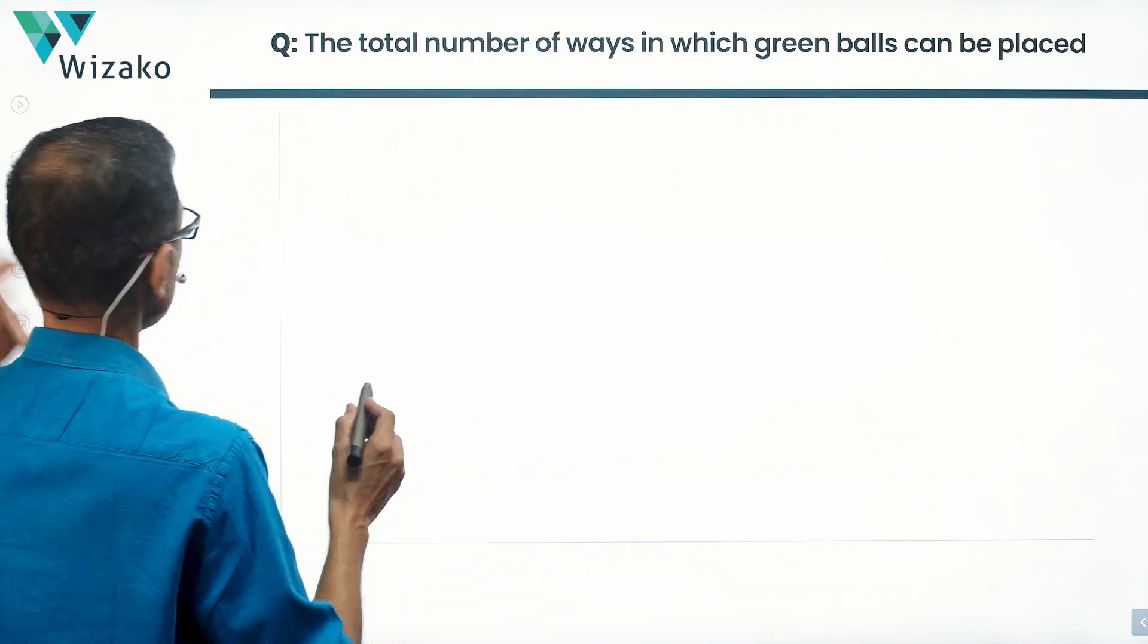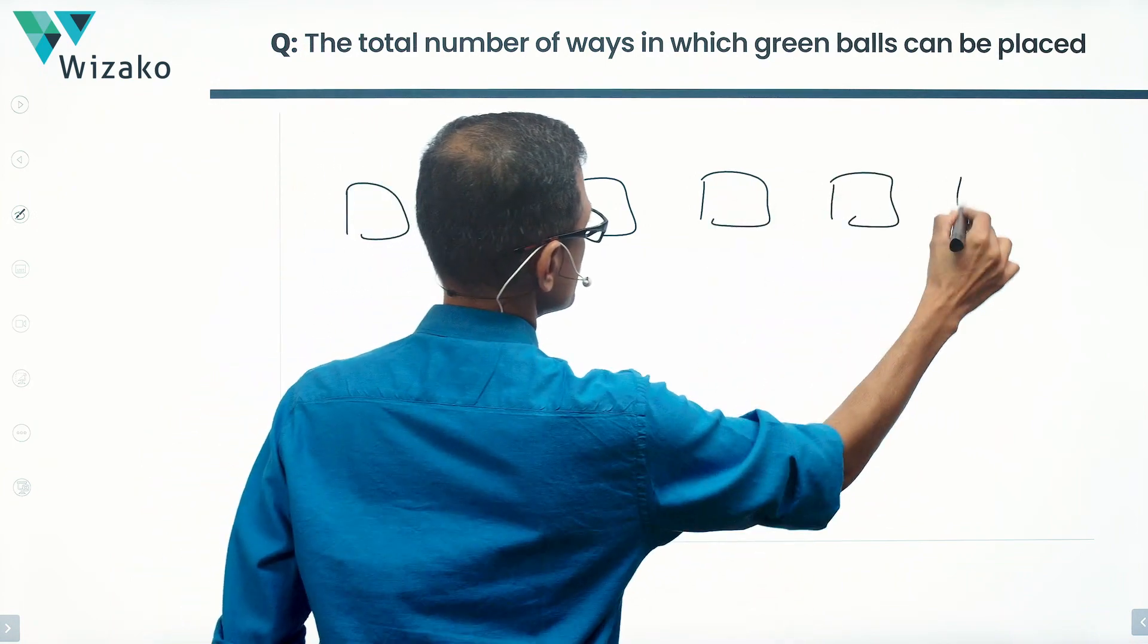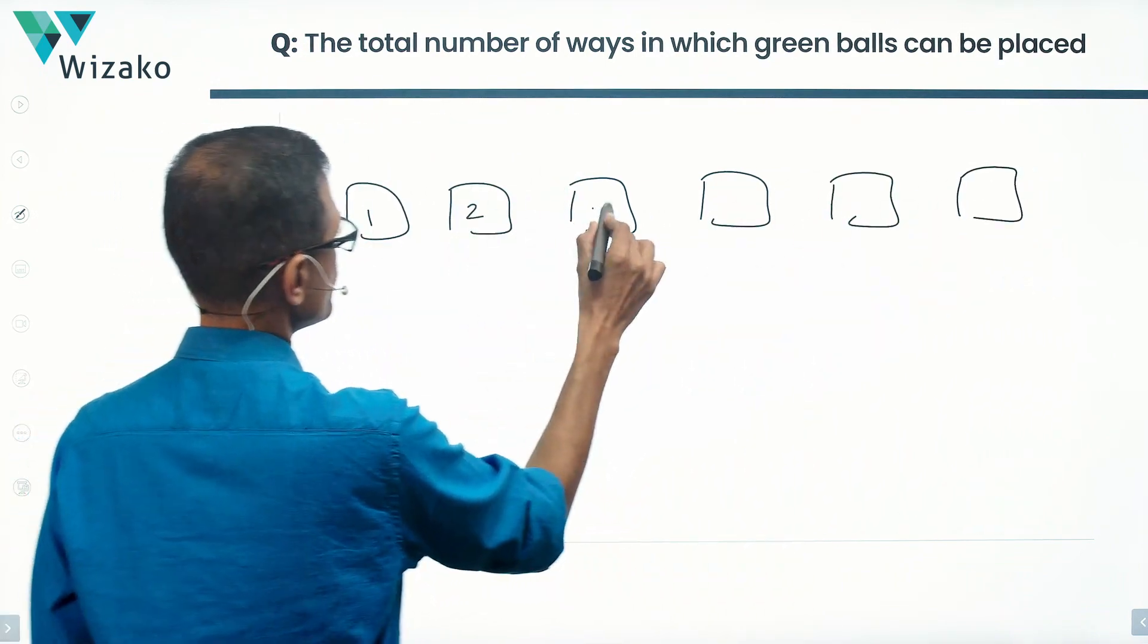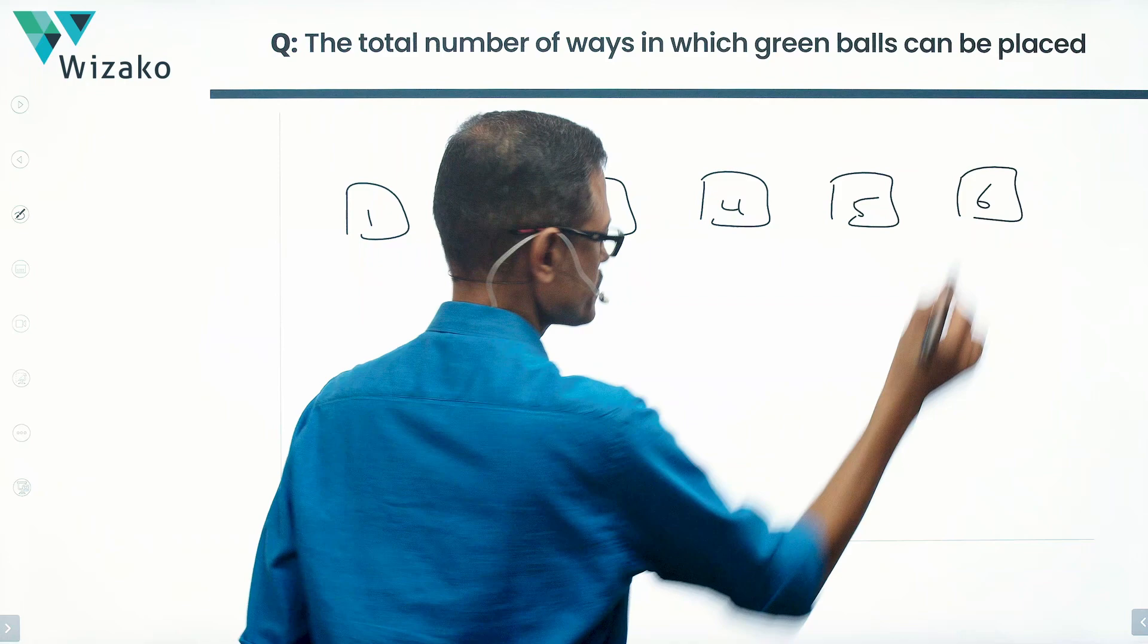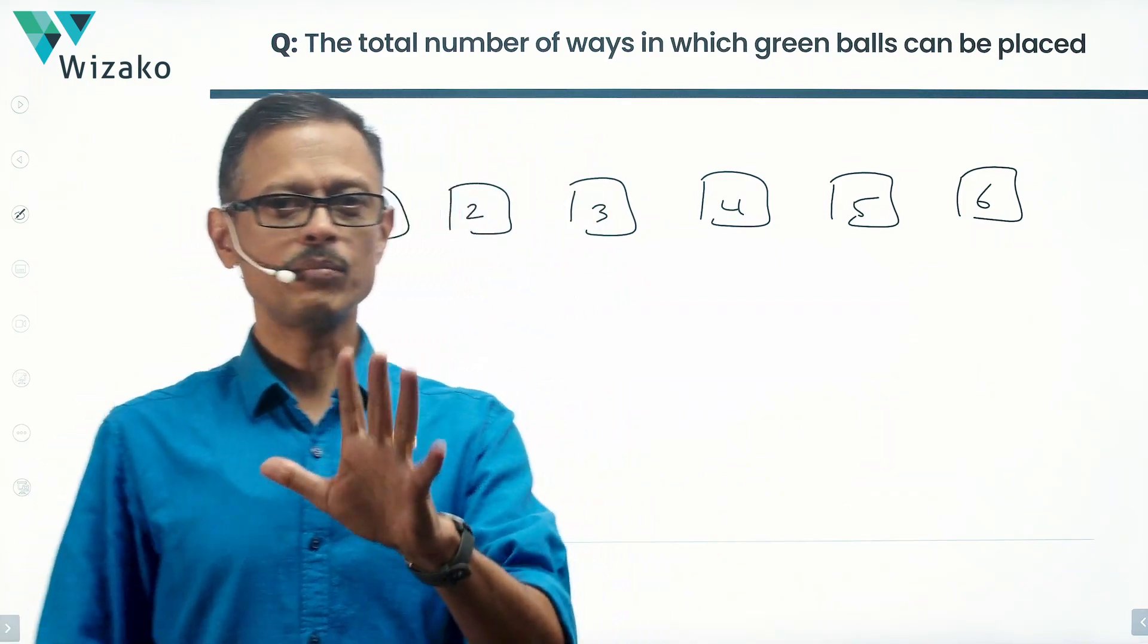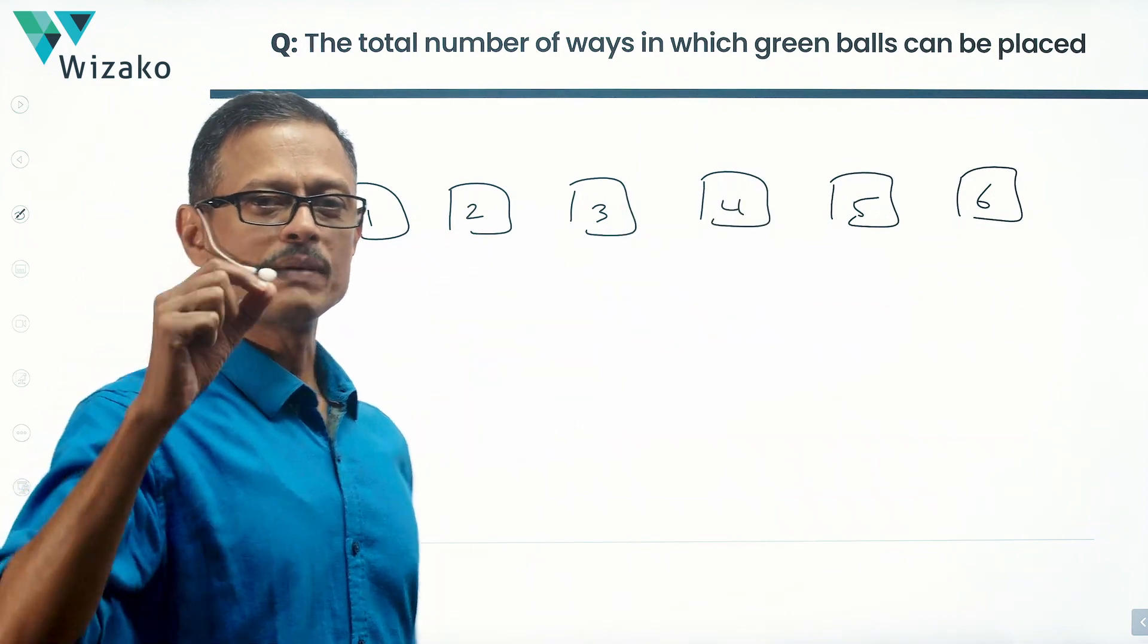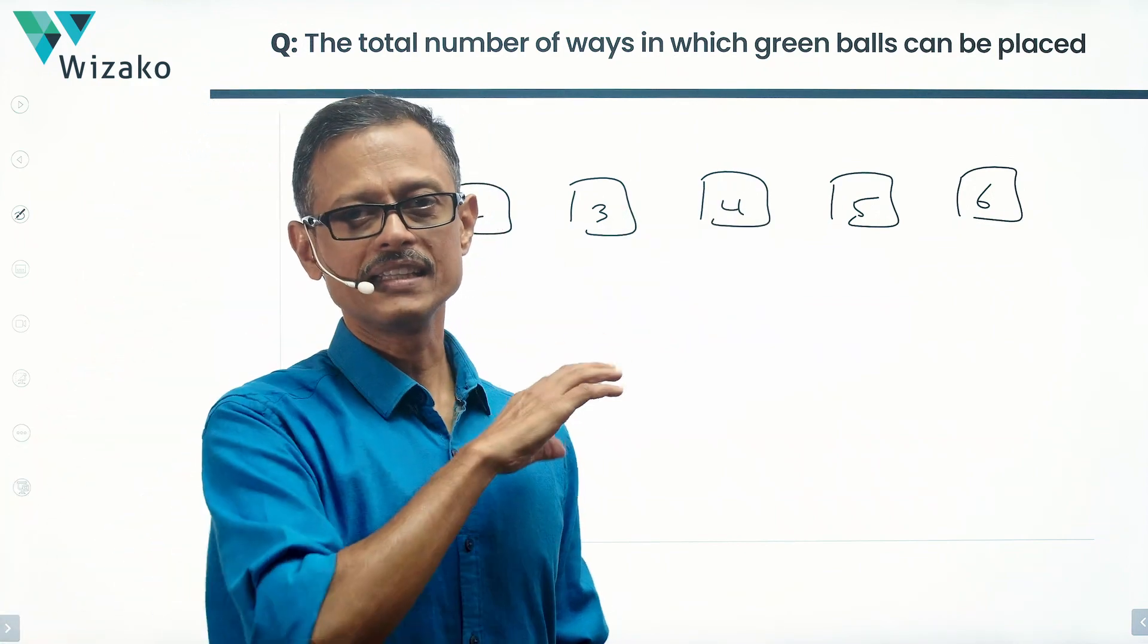We have six boxes with us, numbered 1, 2, 3, 4, 5, 6. We're going to place either one green or one red ball in each of these boxes. The condition being that we need to place at least one green ball in these boxes. So only one green ball - 2, 3, 4, 5, 6 can be red. One can be green. At least one of these boxes needs to have a green ball.